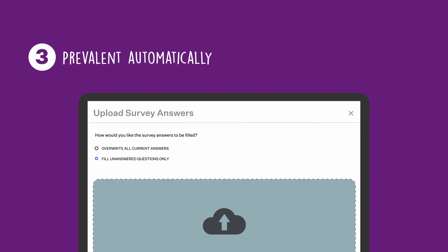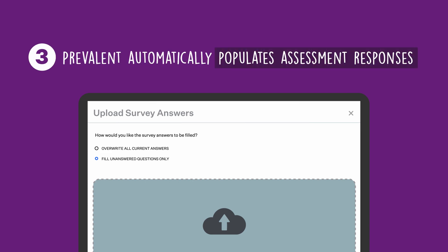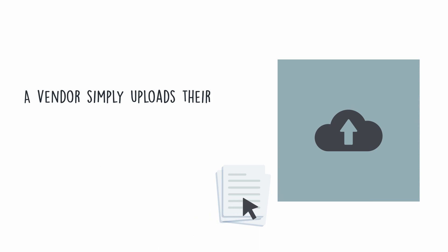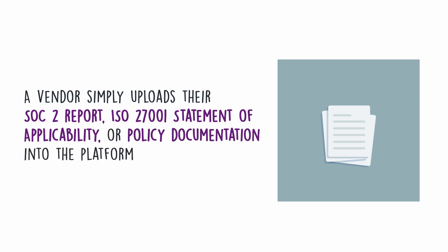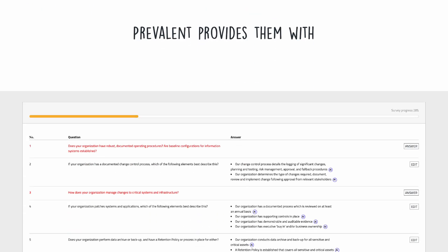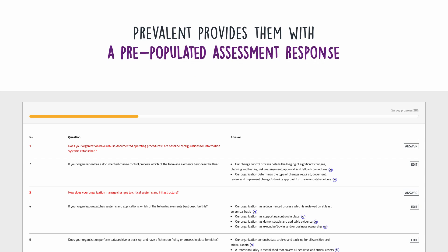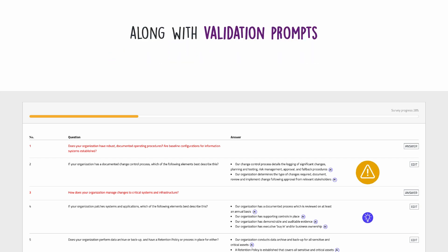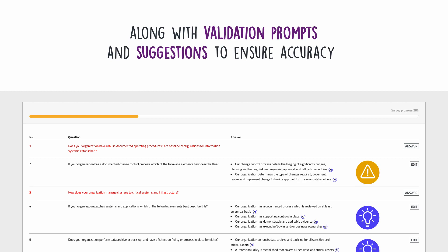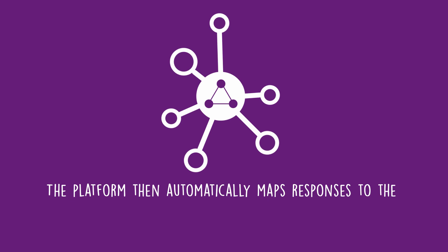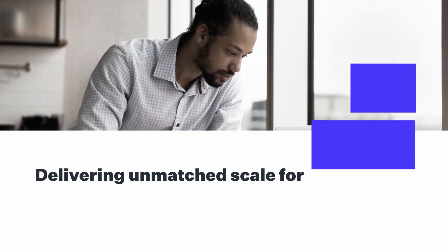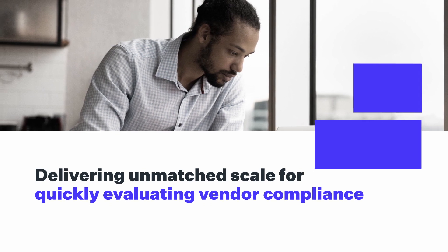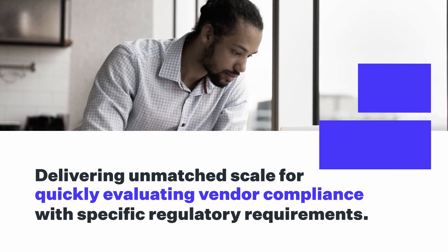Finally, Prevalent automatically populates assessment responses. A vendor simply uploads their SOC 2 report, ISO 27001 statement of applicability, or policy documentation into the platform, and Prevalent provides them with a pre-populated assessment response, along with validation prompts and suggestions to ensure accuracy. The platform then automatically maps responses to the Prevalent compliance framework, delivering unmatched scale for quickly evaluating vendor compliance with specific regulatory requirements.